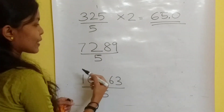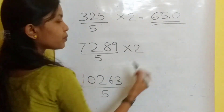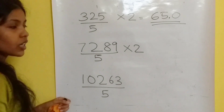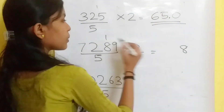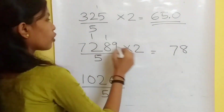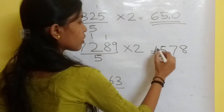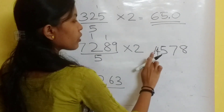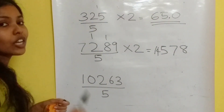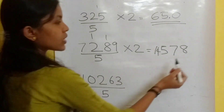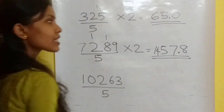Now let's take another example: 7289 divided by 5. Again, multiply by 2. 9 twos are 18, 16 plus 1 is 17, 4 plus 1 is 5, giving 14578. The answer should contain one digit after the decimal place, so the answer is 1457.8.